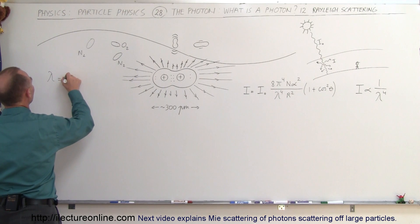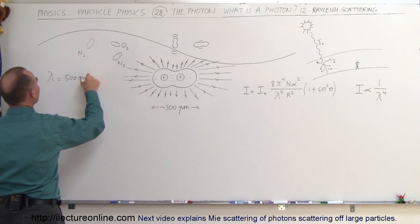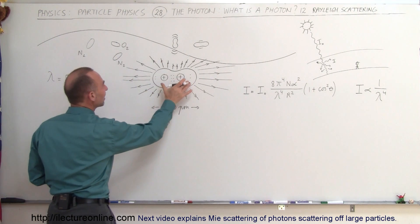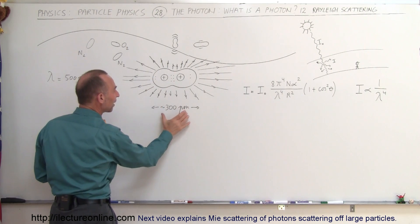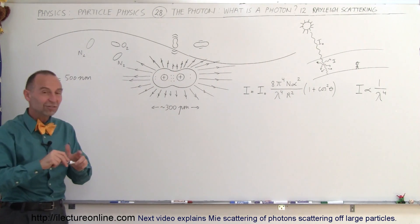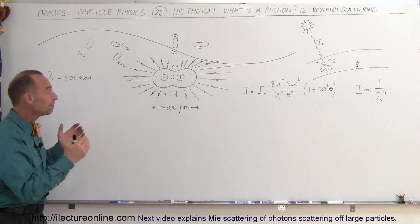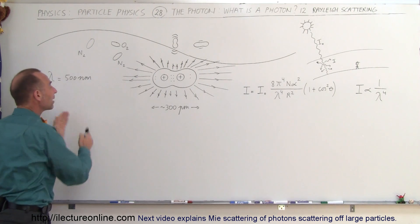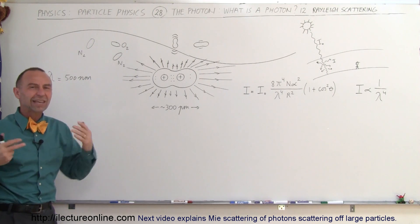So the lambda of sunlight is about 500 nanometers, and the typical length of a nitrogen or oxygen molecule is about 300 picometers, which means the wavelength of visible light is more than a thousand times the size of the particles that it scatters on.